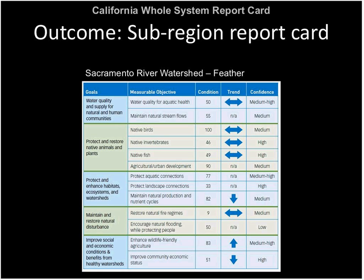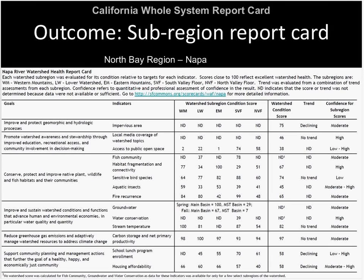Here's an example — a sub-region report card in the Sac River watershed, focused on the Feather River watershed. Goals, objectives, conditions, scores, and trends are all shown in the table, along with our confidence in the findings. After about two and a half years of analysis, we obtained goals from stakeholders and objectives, analyzed available data using indicators corresponding to those objectives, looked at trends, and applied our own confidence in our findings. Looking at the Napa River project table, I want to point to the third goal: conserve, protect, and improve native plant, wildlife, and fish habitats.